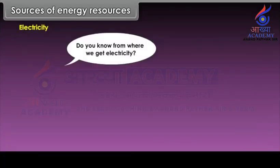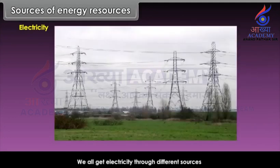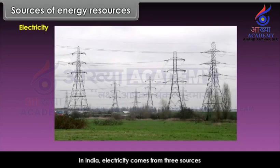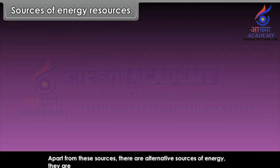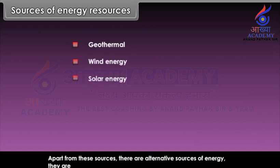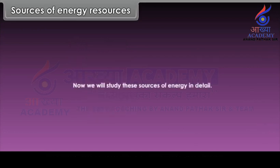We all get electricity through different sources. In India, electricity comes from three sources: water, mineral fuels and atomic minerals. Apart from these sources, there are alternative sources of energy — they are geothermal, wind energy, solar energy, nuclear energy and tidal energy. We will now study these sources of energy in detail.